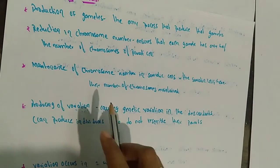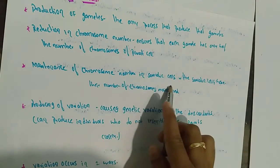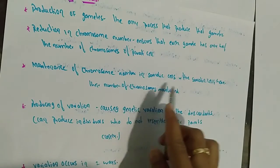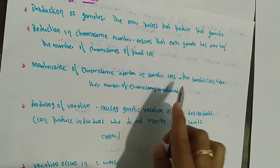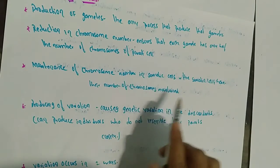Maintenance of chromosome number in somatic cells — the somatic cells maintain their chromosome number through meiosis.